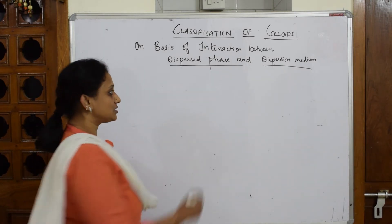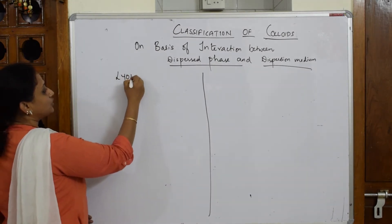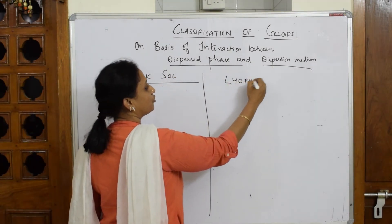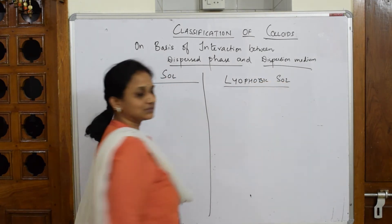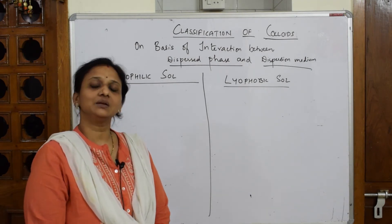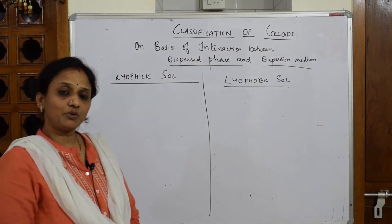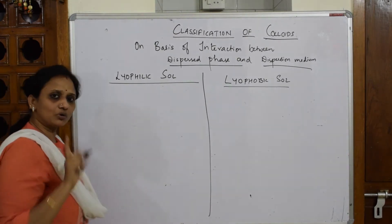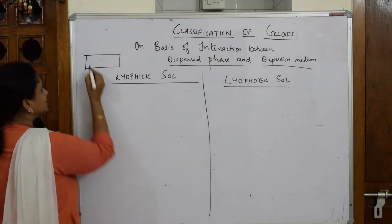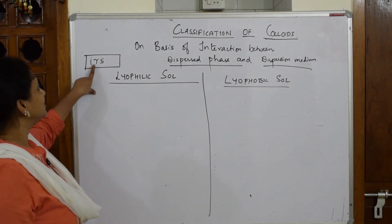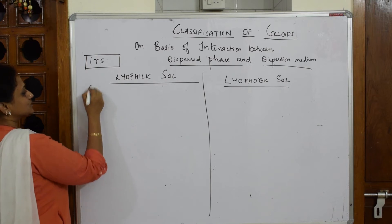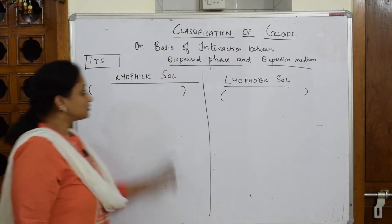Based on this, you have two types to study: Lyophilic Sol and Lyophobic Sol. The most important thing is — if this is asked for three marks, minimum four points should be written. The key word to remember between Lyophilic and Lyophobic is IRS — not Indian Railway Services, but we'll see what it stands for. Lyophilic is where we start, and each point earns half a mark.